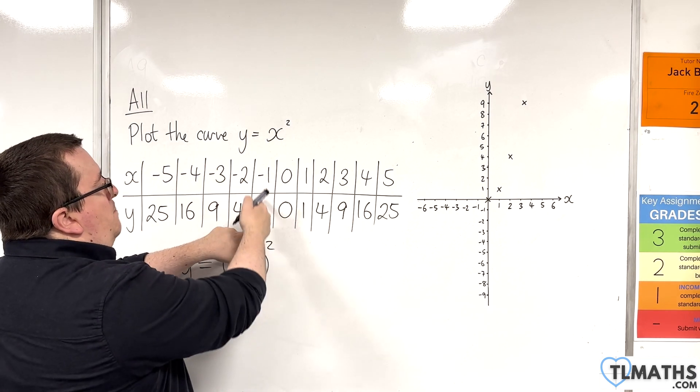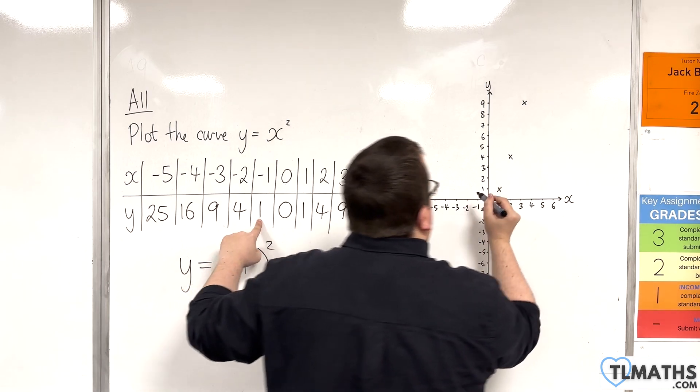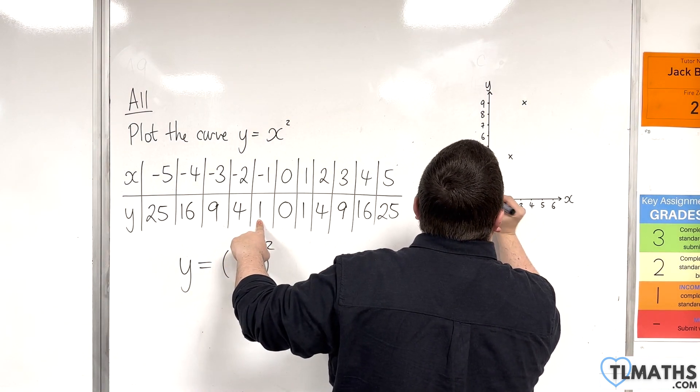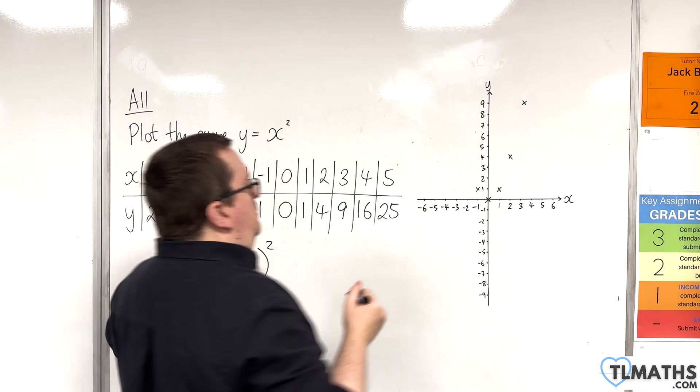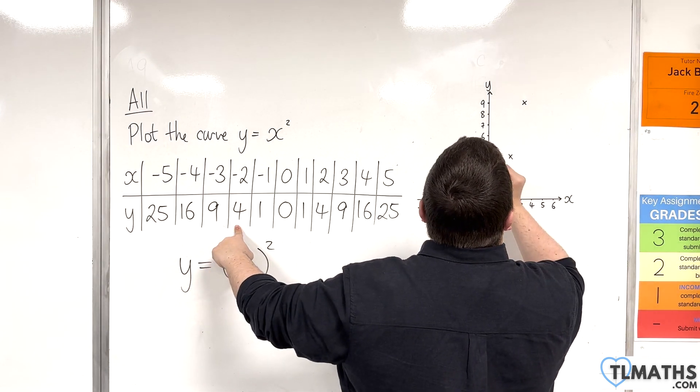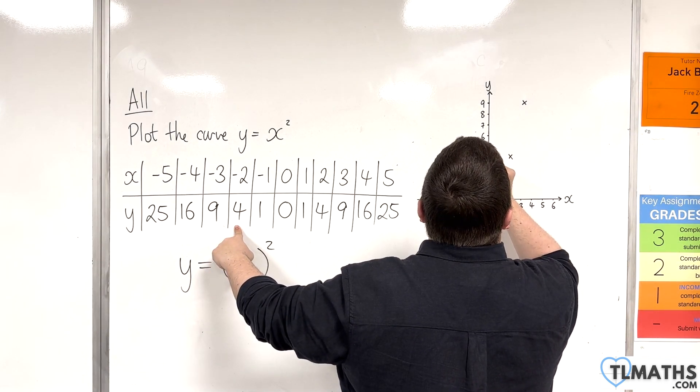Let's go back on ourselves now. So, minus 1, 1. So, minus 1, 1 is there. Then, minus 2, 4. Minus 2, 4 is about there.